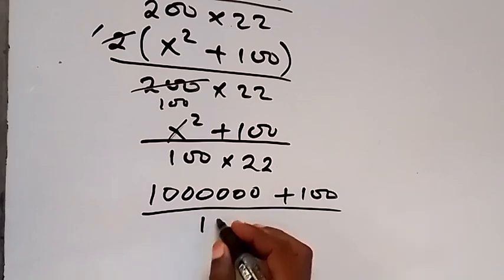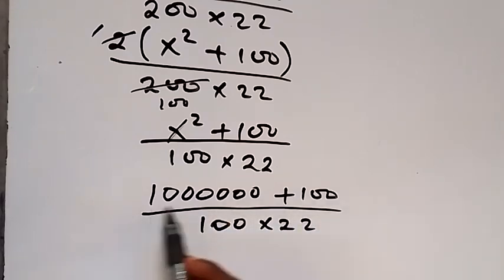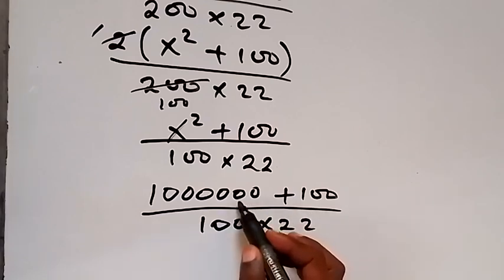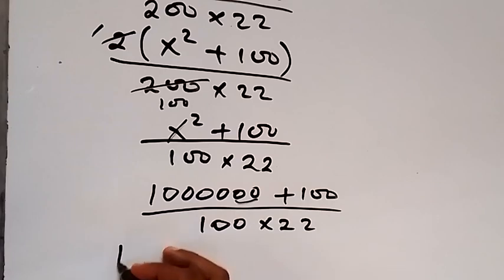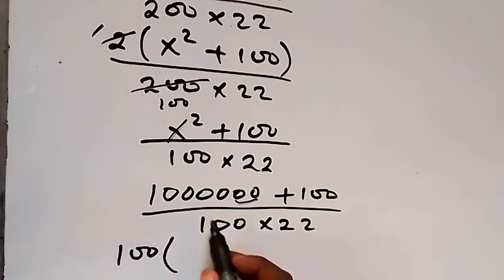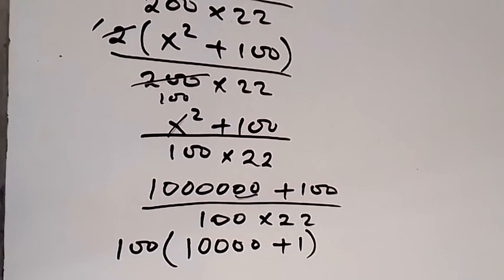Divided by 100 times 22. And from here we can factor 100 out. Let's factor two zeros out. And when we factor 100 out here, what we have left here will be 10,000, that's four zeros, and the plus what will be left here is 1.